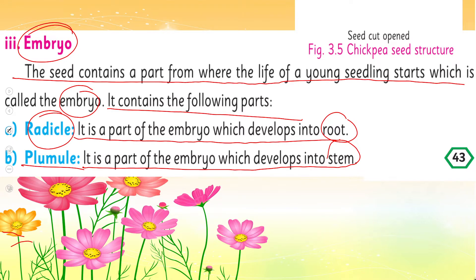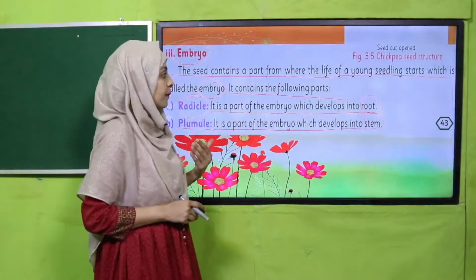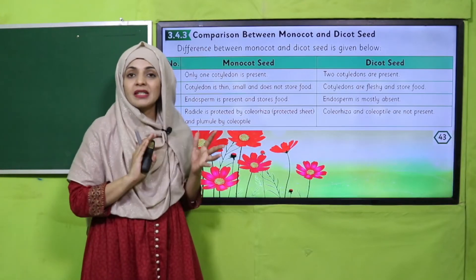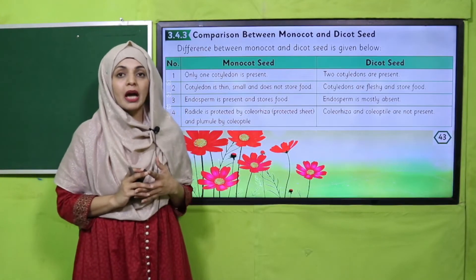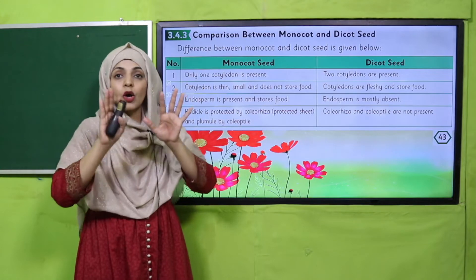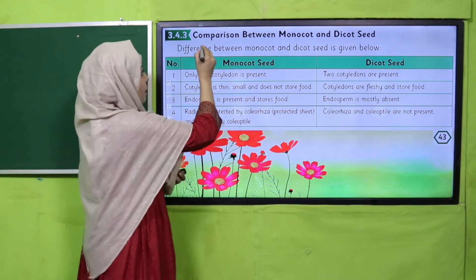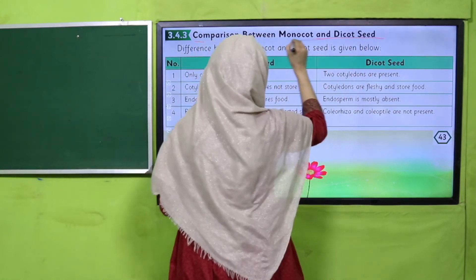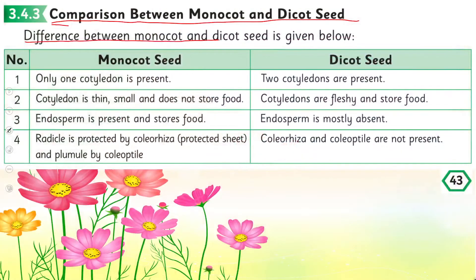Both radicle and plumule are present inside the seed — one gives rise to roots and the other develops into the stem. In the previous lecture we studied monocots; today we studied dicots. Let's now compare both. Comparison between monocot and dicot: differences are given below.